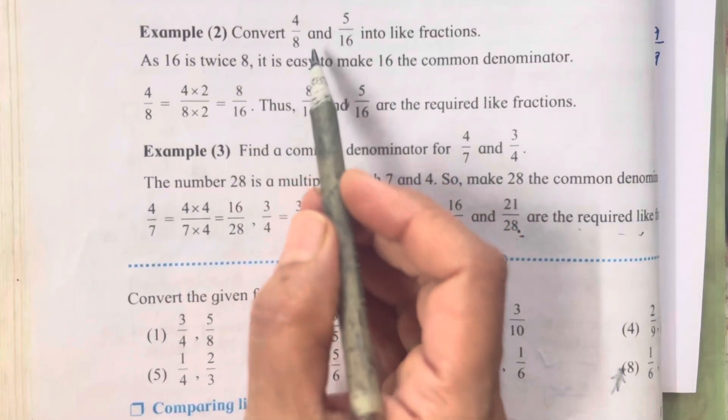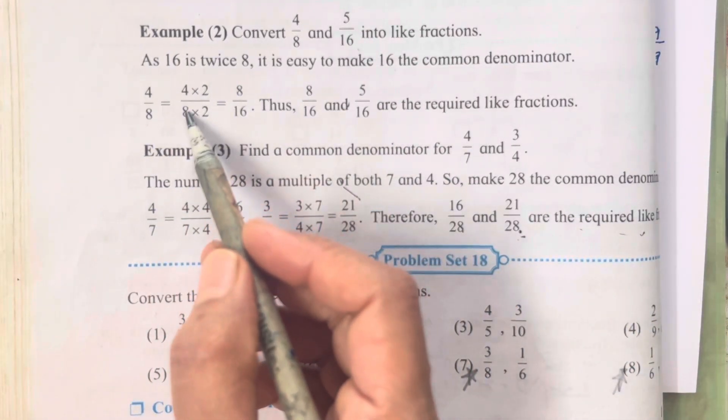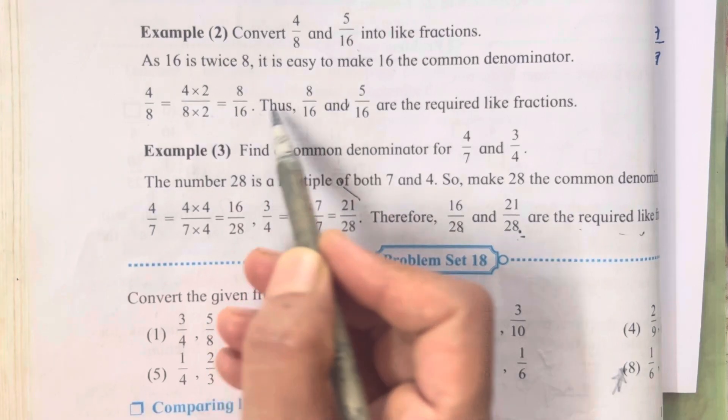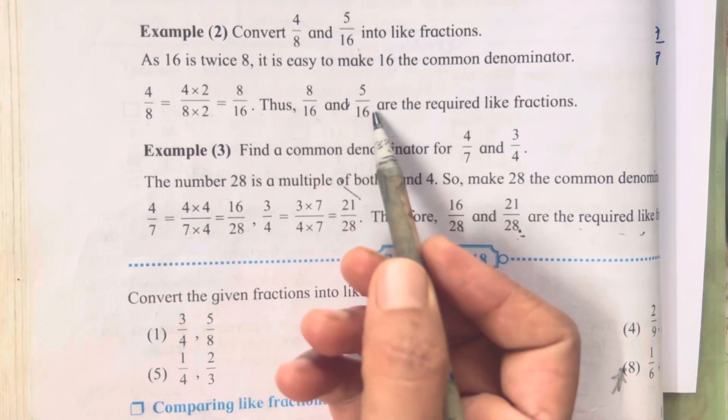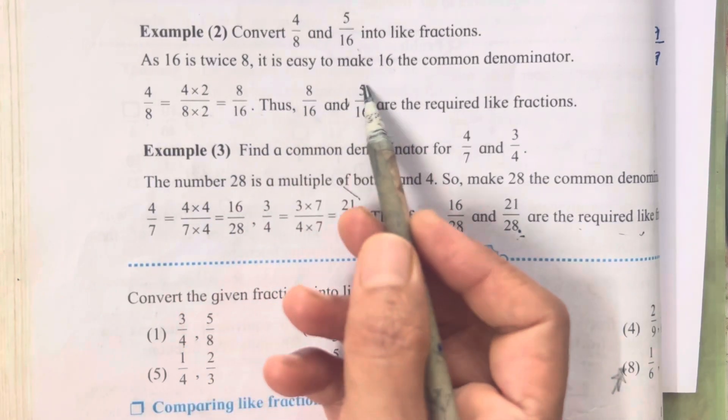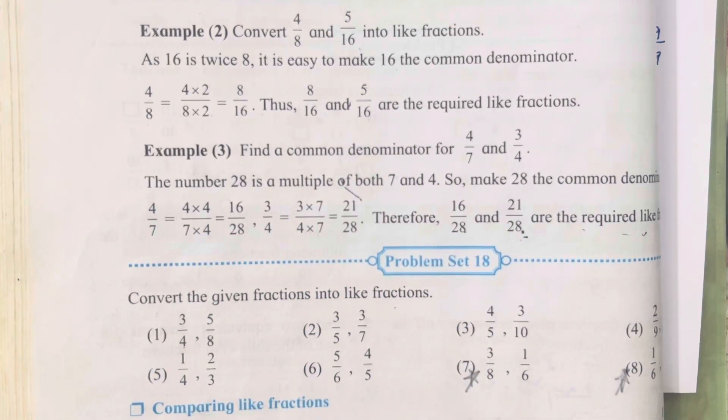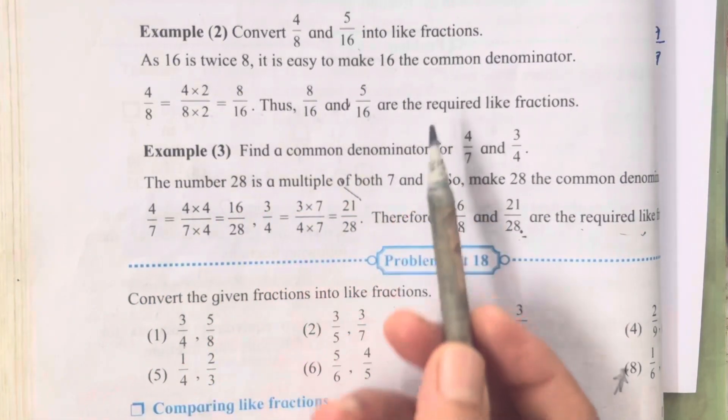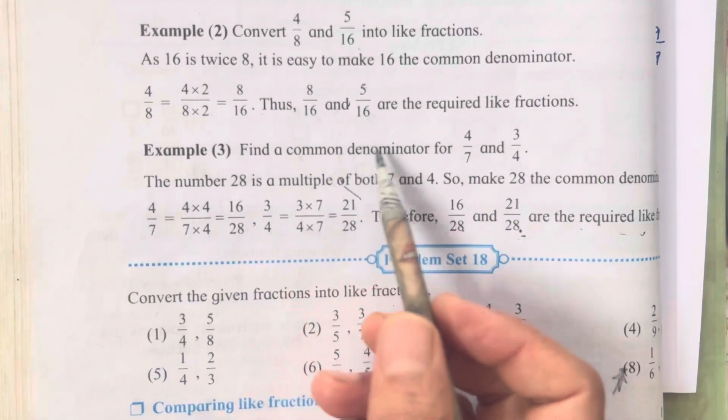Next is 4 upon 8 and 8 upon 16. So over here also they have done the same thing. 4 into 2 is equal to 16. And this was already 16, so we don't need to change it over here. This was the answer that we have got and this was the question. So these were the required like fractions. You all can solve it in this way also children. Try not to write all these statements, it is not important. We have to only solve the sum.